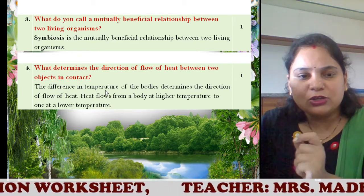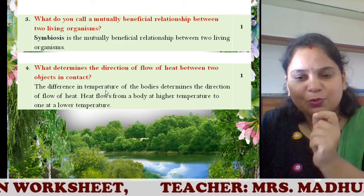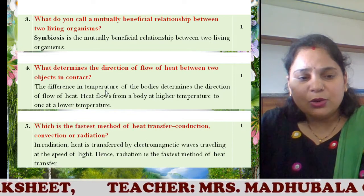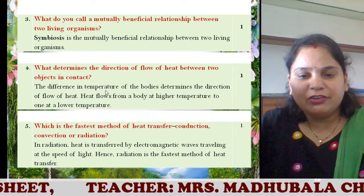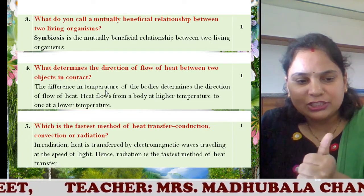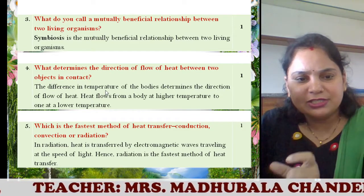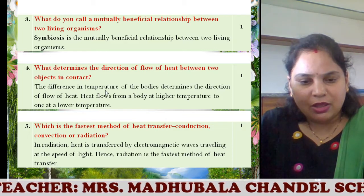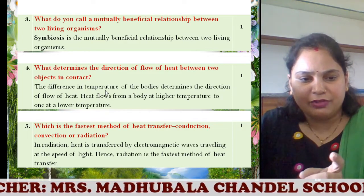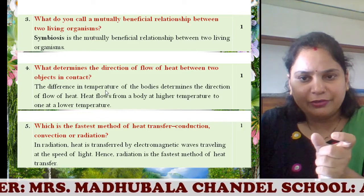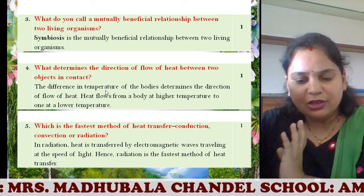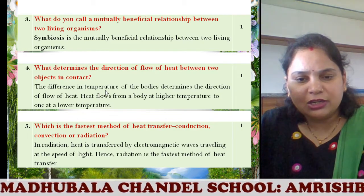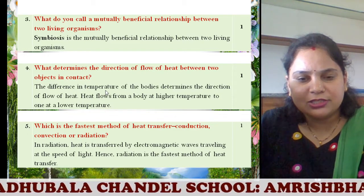So answering is also a technique — you need to answer very, very smartly. Next: which is the fastest method of heat transfer? Out of conduction, convection, and radiation, first identify which is the fastest method. The answer is radiation, and you have to give a brief explanation as well. Half marks for the word radiation and half marks for the explanation. This will be shared in the Google Classroom — you can go through all the answers there.